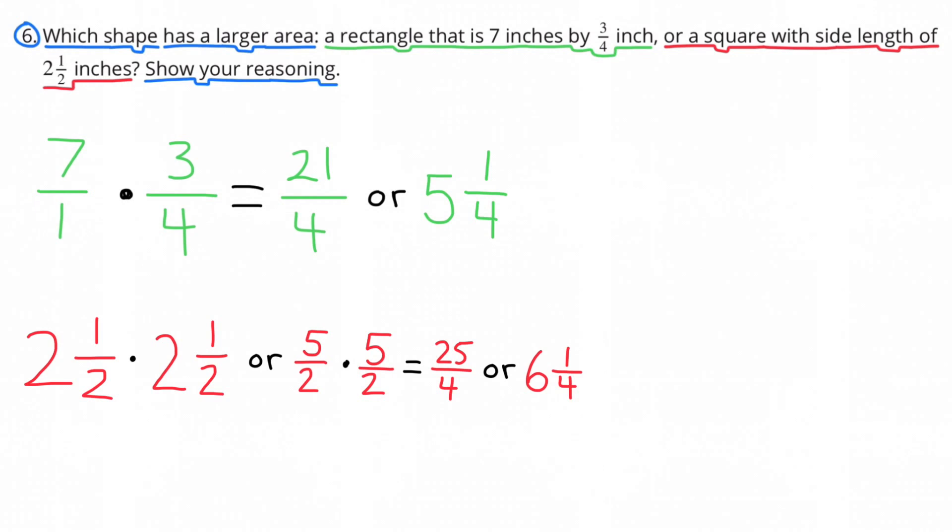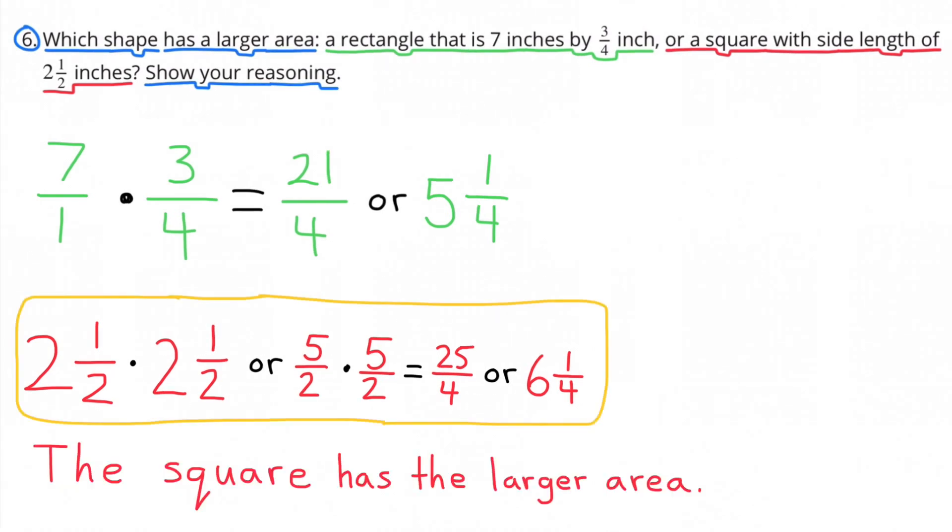2 1/2 times 2 1/2 is the same as 5 halves times 5 halves, which equals 25/4, or 6 1/4. The square has the larger area because 6 1/4 is greater than 5 1/4.